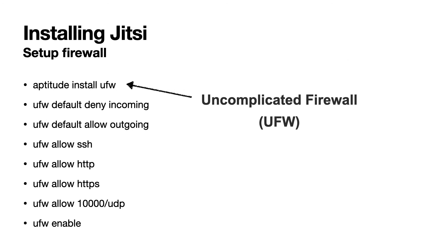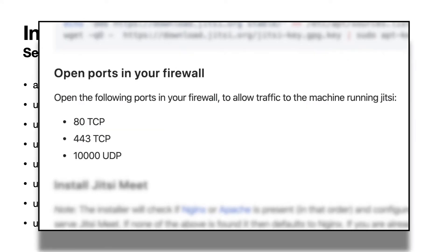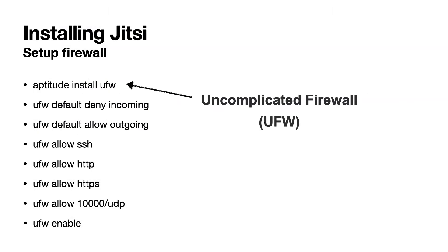When it comes to setting up the firewall, the Jitsi quick start guide only states which ports you need to open but does not exactly tell you how to do this. I'm using UFW, the uncomplicated firewall, for this, so let's have a look at the details. You install the Debian package UFW and issue the following commands to set up the firewall rules.